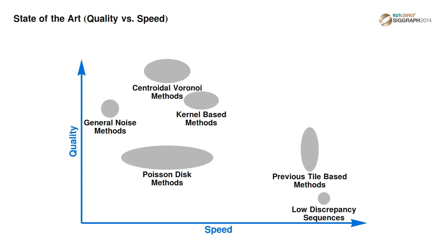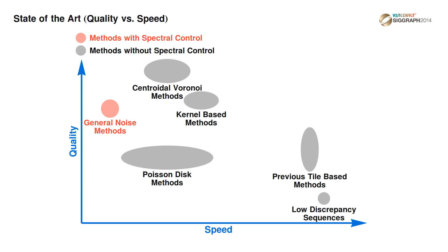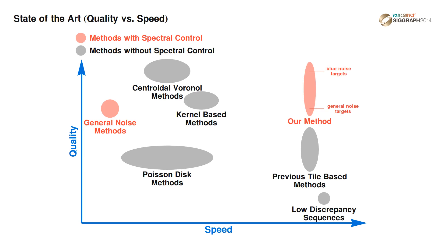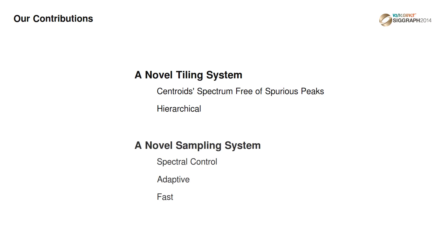In comparison to the state-of-the-art sampling methods, tile-based methods offer the best compromise between speed and quality. However, existing tile-based methods suffer from spurious Fourier peaks and lack spectral control. Our tile-based approach overcomes these drawbacks without sacrificing speed. We introduce a novel tiling system that achieves a fast and high-quality sampling distribution with spectral control, which can outperform existing state-of-the-art tile-based methods.